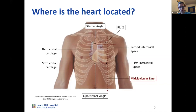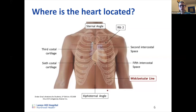The intercostal space means the space between ribs — 'cost' means rib in Latin and French, so intercostal means between the ribs. Using your sternal angle at rib two, you can count down to the fifth intercostal space where the apex is located. The right border of the heart corresponds to the parasternal line — 'para' means next to, so the parasternal line runs right next to the sternum.